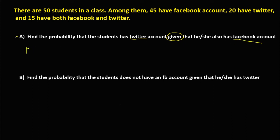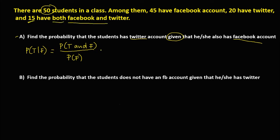To find the probability that the student has a Twitter account given that he also has a Facebook account, we can rewrite this as the probability of having a Twitter account and a Facebook account over the probability of having a Facebook account. Since we have 50 students and 15 have both Facebook and Twitter account, the probability of having a Twitter account and Facebook account is 15 over 50.